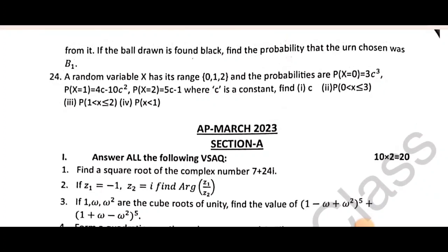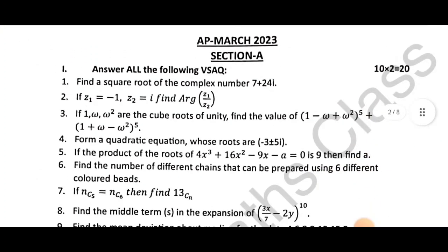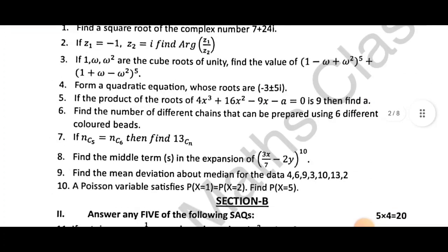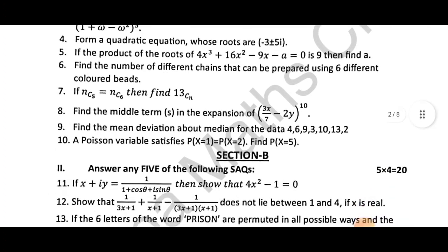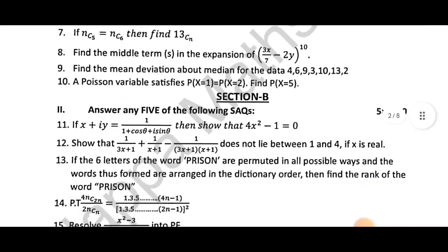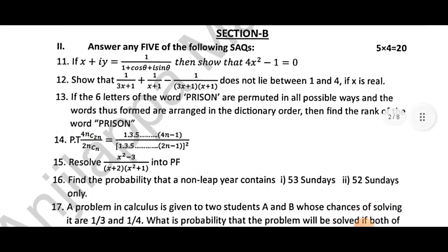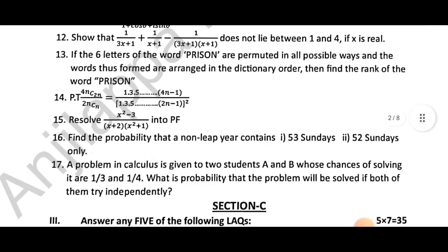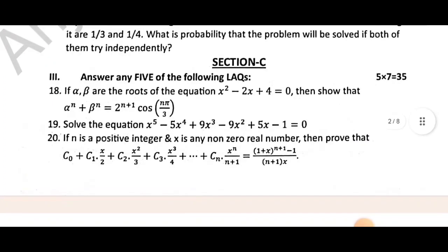Twenty-second mean deviation about mean very easy. Twenty-third problem related to Bayes theorem. Twenty-fourth random variables, z-value find and conditions problem. Next, March AP March 2023 question paper. First question square root find, next argument z1 by z2. Fourth question equation find roots.